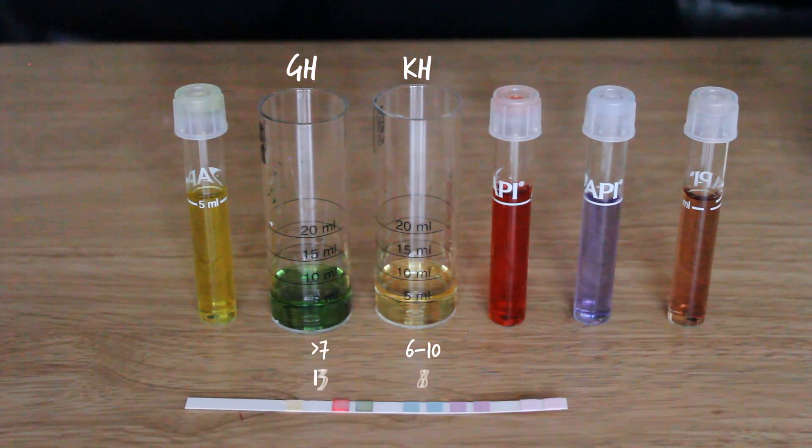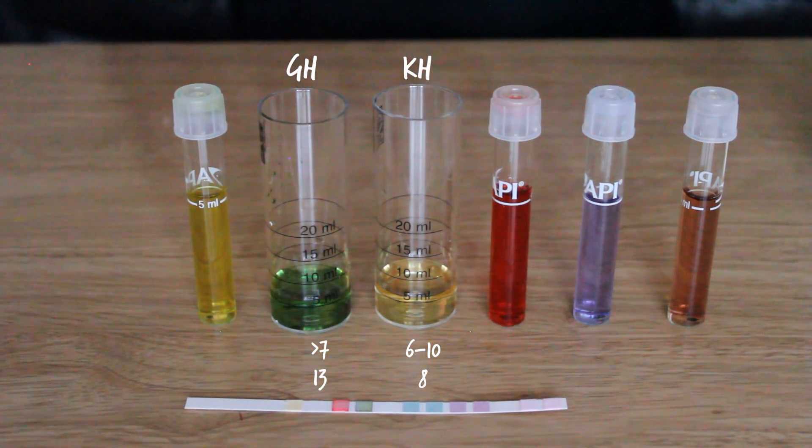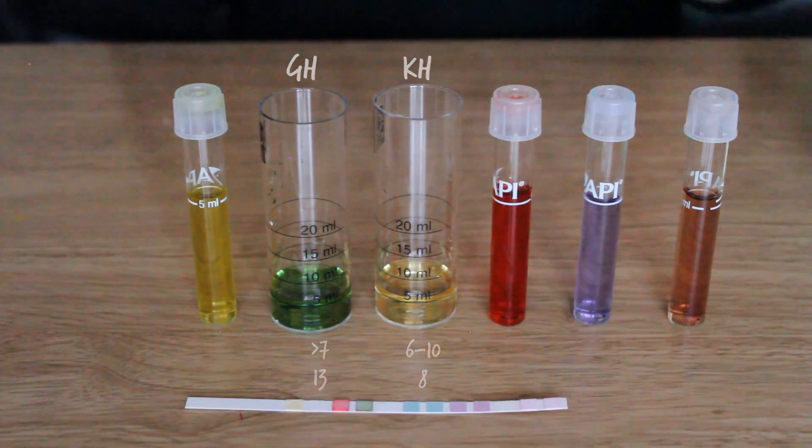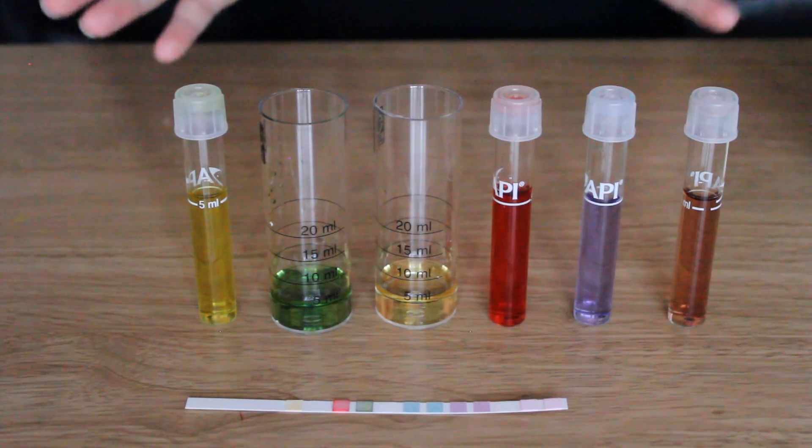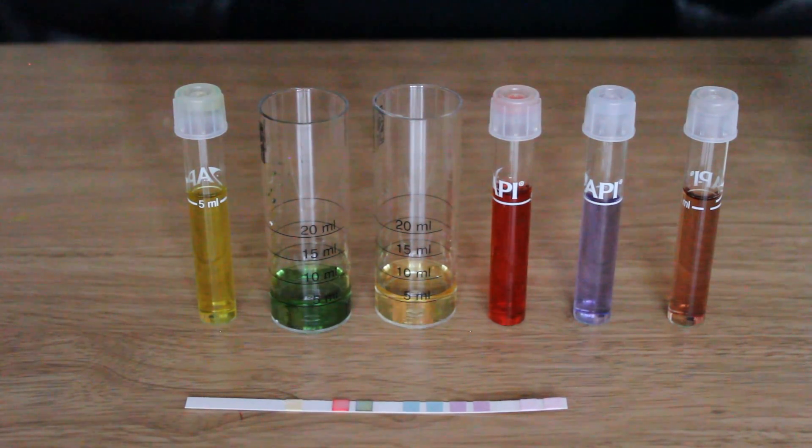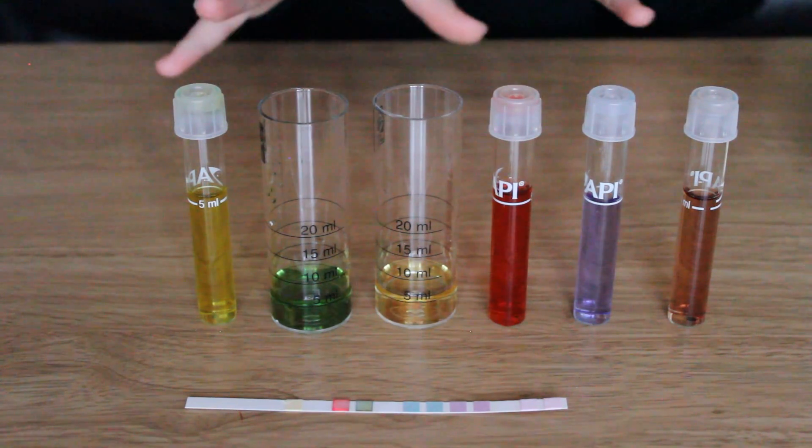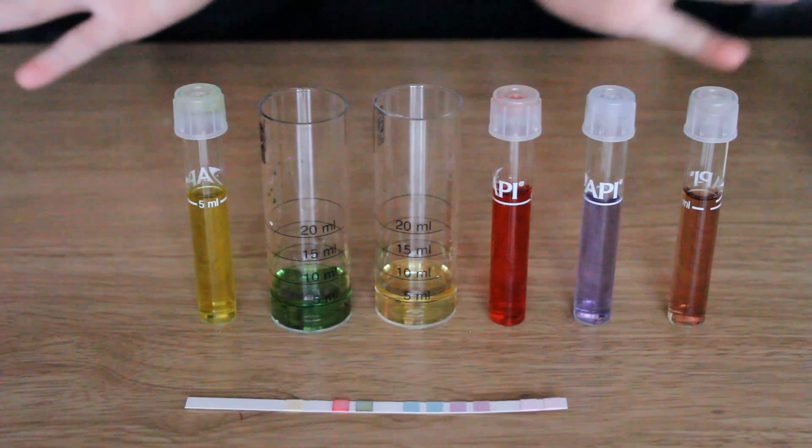Then we have the GH which was the correct amount of drops and same with the KH. So overall the test strip I think is a great indicator and obviously its results aren't far off. I've really enjoyed trying all these out and if you want to know these are all from proshrimp.co.uk. Thank you very much for watching, I hope you've enjoyed this.